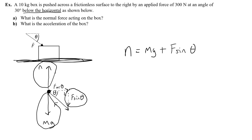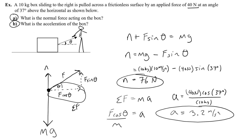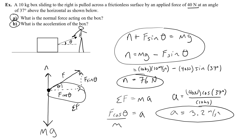This is different from the previous problem. Before, F sine theta was lifting the box up, so the normal force equaled the weight minus that upward component. Now we're pushing down on the box, so it's plus F sine theta instead of minus.